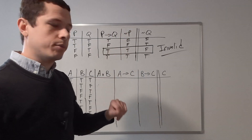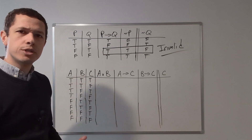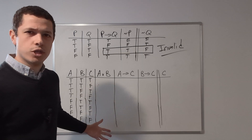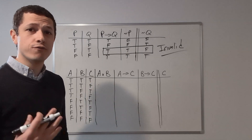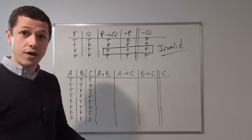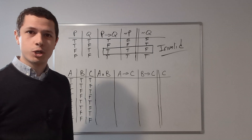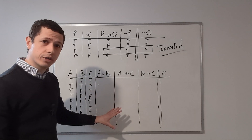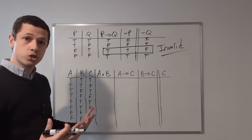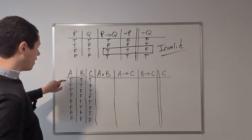That's a very simple argument. Let's move on to a more complicated one — now we have three atomic statements, which means we're dealing with eight rows. It's worth going through this kind of exercise because professors will sometimes give you arguments with four or even five atomic statements. So let's go ahead and calculate this. We have a disjunction: disjunctions are false when both disjuncts are false, and otherwise they're true.